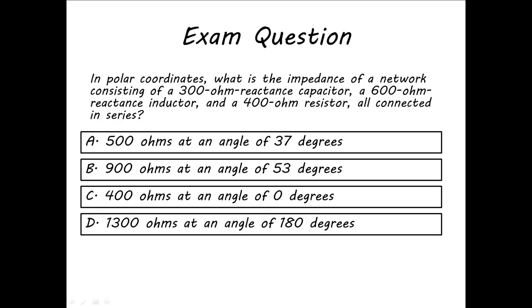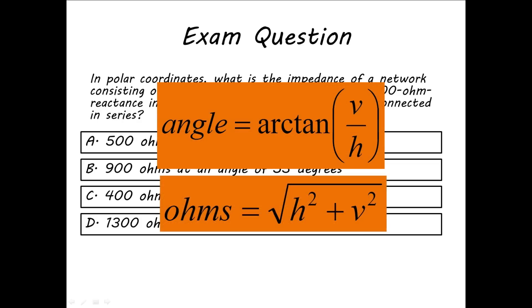In the extra class exam, you'll find questions that look like this one. They ask you to calculate the impedance of a circuit in polar coordinates. To get the exact answer, you can memorize a few formulas and remember to bring your calculator, or you can use a diagram and a few simple rules.